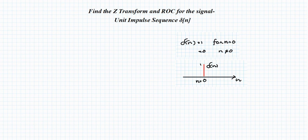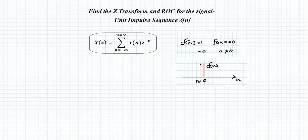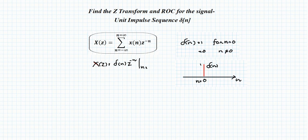To find the Z-transform we use the standard formula: X(z) = Σ from n = −∞ to ∞ of x[n] · z^(−n). In this case the signal exists only at n = 0, so we don't need to evaluate the summation from minus infinity to infinity. We evaluate δ[n] · z^(−n) at n = 0, giving X(z) = 1.